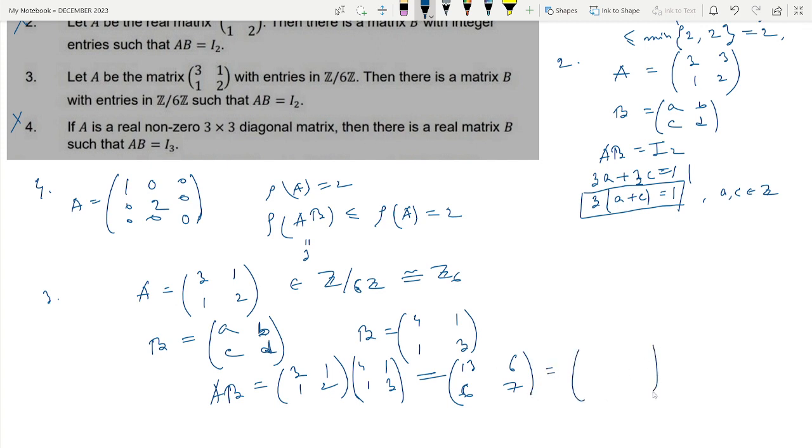So there is no element 13 in Z6, it will be actually 1. This is actually 0, this is actually 0, and this 7 is actually 1. We should not write the intermediate values because it is in Z6. We should write directly this element, so it is actually I2. So if we take A equal to [3, 1; 1, 2], then we have matrix B from Z6 such that AB equals I2 in Z6. So option 3 is the correct option.